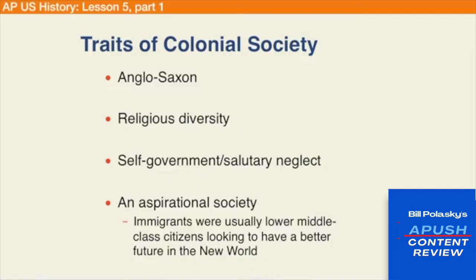Lastly, this was an aspirational society. Immigrants were sort of have-nots from Europe, mostly of lower middle class origins, coming to America in search of land, territory, or a better life — a means to better their economic station. They were looking forward to this better future in the new world, and this aspiration would be reinforced by their experiences and would further pull more immigration over in later periods.